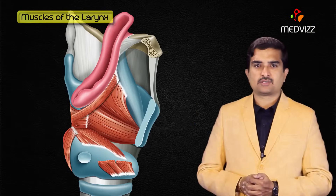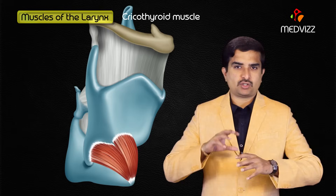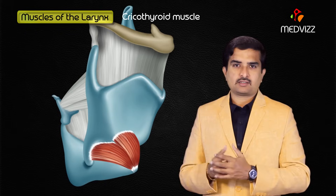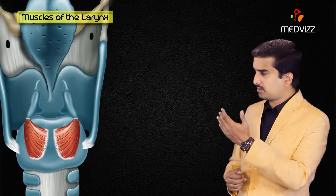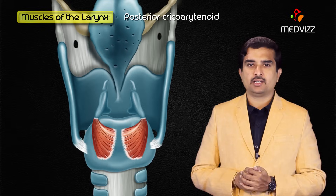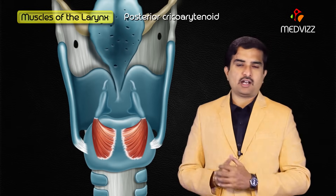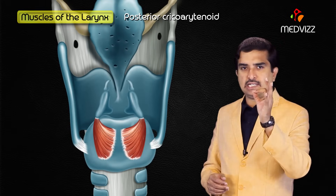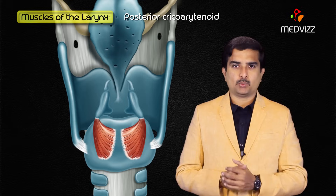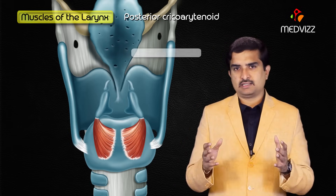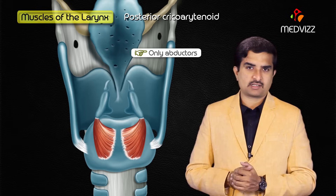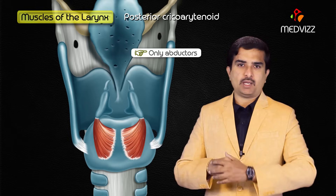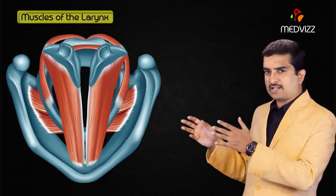The muscles of the larynx include the cricothyroid, which tilts the thyroid cartilage forwards and tenses and elongates the vocal ligaments. The posterior cricoarytenoid laterally rotates the arytenoid cartilage and abducts the vocal ligaments. These muscles are the only abductors of the vocal ligaments and are thus extremely important in maintaining an open airway.